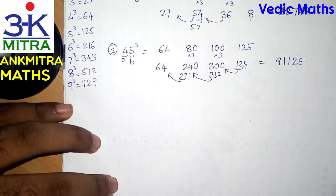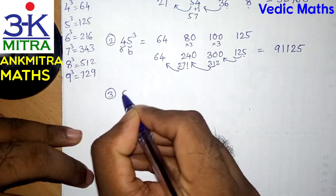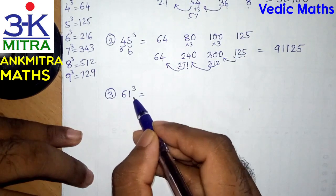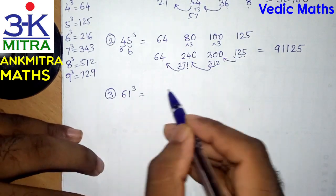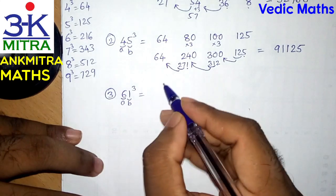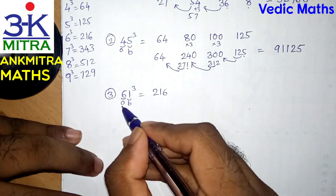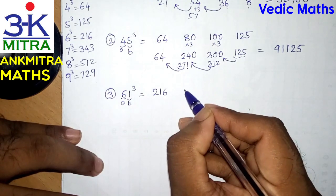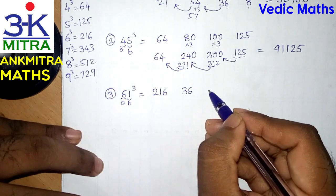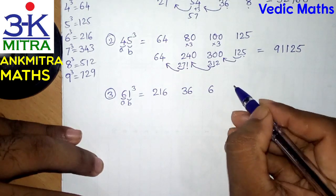Suppose I am to find the cube of 61. Whenever we have a small digit in either of the two places, the procedure becomes very easy. A is 6 and B is 1. A cube is 6 cube which is 216. A square multiplied by B: 36 multiplied by 1 is 36 itself. B square multiplied by A: 1 squared is 1, multiplied by 6 is 6. And the final number is 1 cube, which is 1 itself.